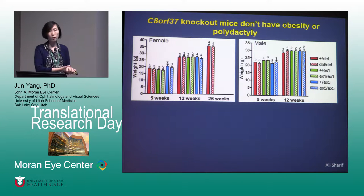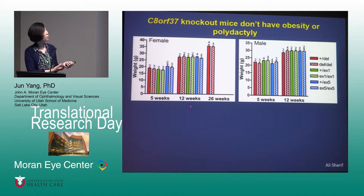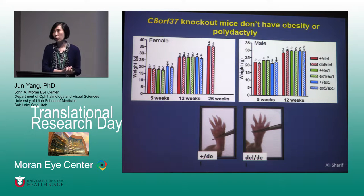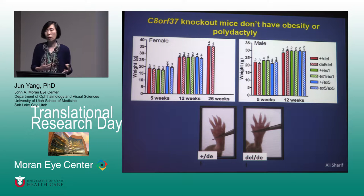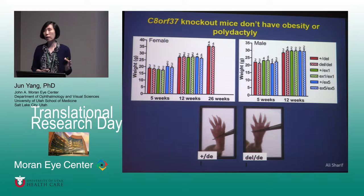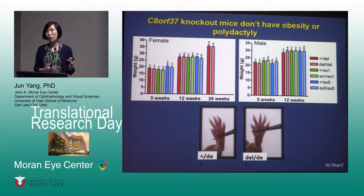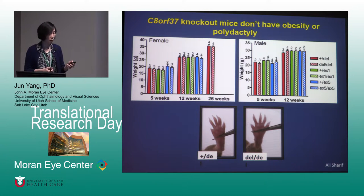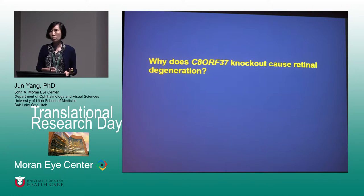However, we found that both female and male mice do not show obesity up to six months of age, and they also don't show polydactyly, which are characteristic symptoms of Bardet-Biedl syndrome patients. In summary, we successfully generated C8orf37 knockout mouse models. These mice show both rod and cone dysfunction and progressive retinal degeneration, but do not show other symptoms outside the retina. These models are therefore good animal models to study retinal degeneration in C8orf37-deficient patients.